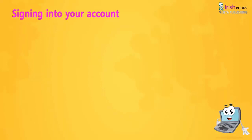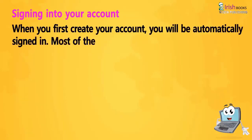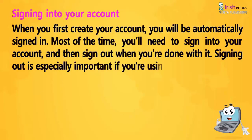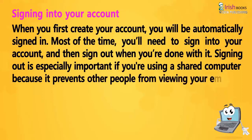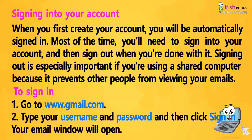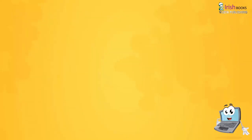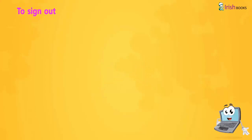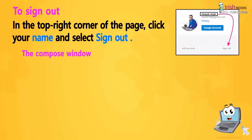Signing into your account: When you first create your account, you will be automatically signed in. Most of the time, you will need to sign into your account and then sign out when you are done. Signing out is especially important if you are using a shared computer, because it prevents other people from viewing your emails. To sign in, go to www.gmail.com, type your username and password, and then click 'Sign in.' Your email window will open. To sign out, in the top right corner of the page, click your name and select 'Sign out.'